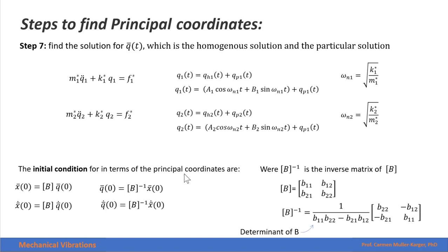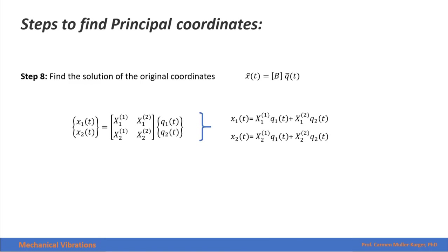To find the initial conditions in terms of the principal coordinates, we invert our modal matrix to express them in terms of the initial conditions of the generalized coordinates. Remember that to invert a 2×2 matrix, we can use this expression shown here, or you can do it with your calculator. The very last step is to find the solution in the original coordinates. To do that, we pre-multiply the solution found in principal coordinates by our modal matrix. Multiplying the matrix by the vector gives us this row times the column, and then this row times the column, and we obtain the response in terms of our generalized coordinates.